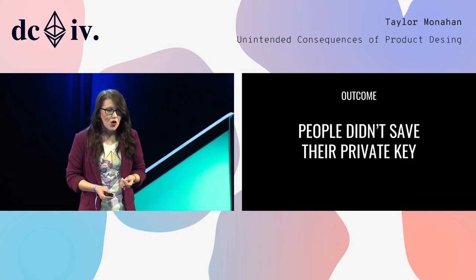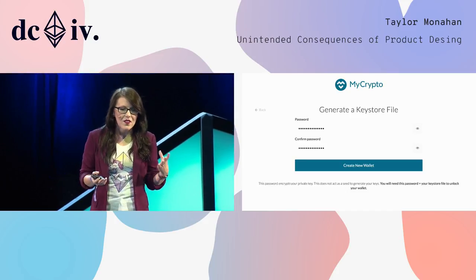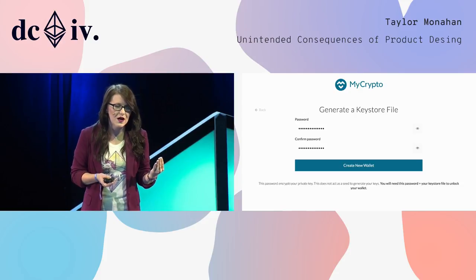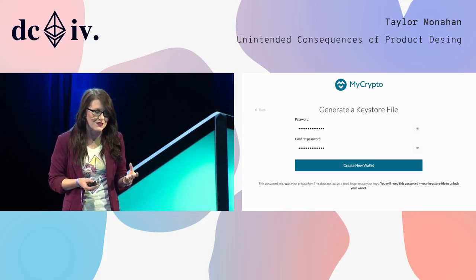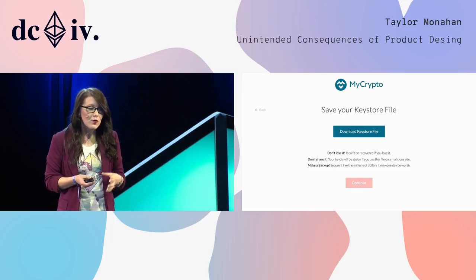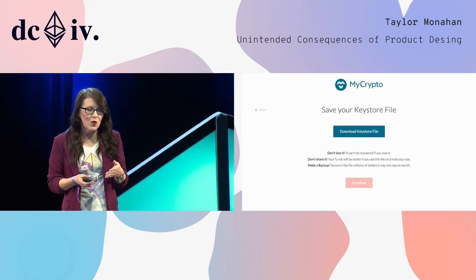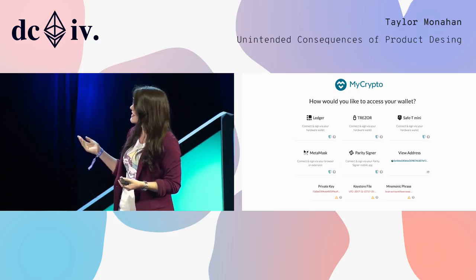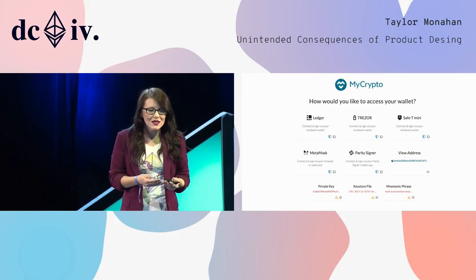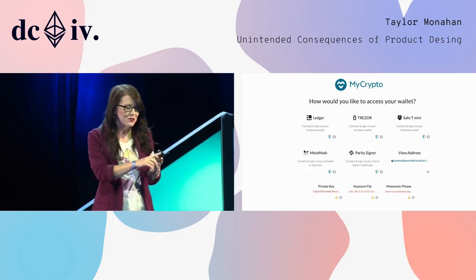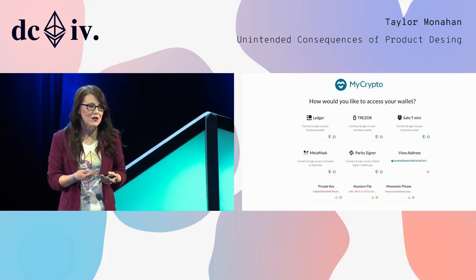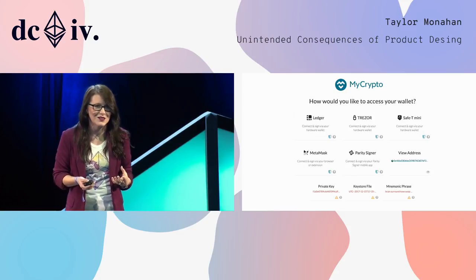So how did we solve this problem? The new interface on MyCrypto has you enter a password, runs algorithms to ensure it's a strong password, then you click 'create new wallet' and it forces you to actually download the keystore file. In order to continue, you have to download that file — and even then we don't give you your address. We give you the ability to unlock your wallet via the file you just created. This ensures the user has not only created the wallet and backed it up, but can also successfully unlock it — which cut down on loss and reduced support tickets significantly.